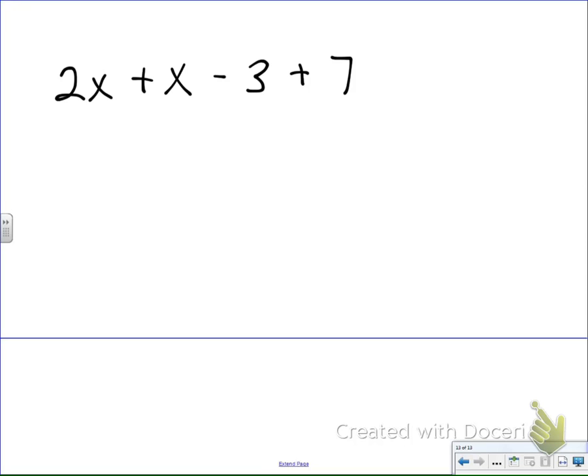So first thing we want to look for is what looks the same. I want to look at do I have numbers that are the same? Do I have x values the same? So if I'm looking first, right off the bat, I see I have 2x right here and 1x right here. That tells me I can combine those. So what I'm going to do off to the side is say alright,